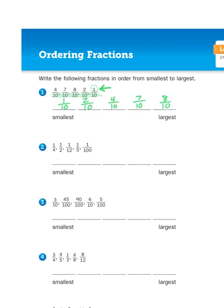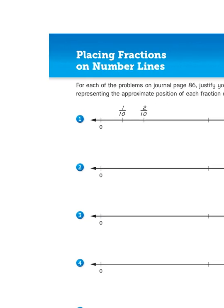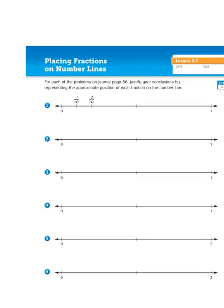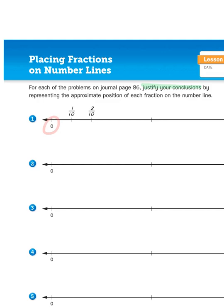Now, let's scroll on over to page 87. And it says, for each of the problems on journal page 86, justify your conclusions. That's just a fancy way of saying show your work by representing the approximate position of each fraction on the number line. So, this number line begins at 0 and ends in 1 whole.